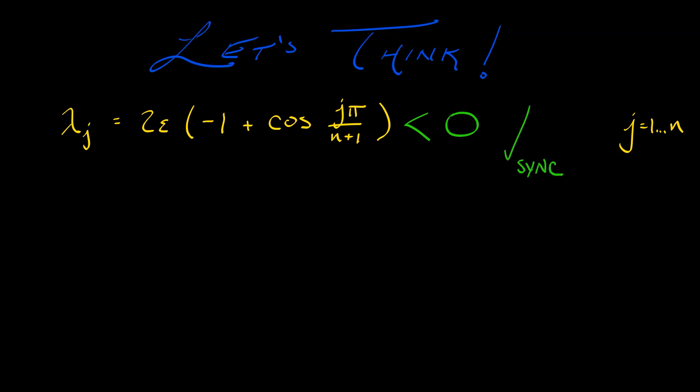But how quickly? Notice, because all these eigenvalues are real, there's a dominant eigenvalue. And the dominant eigenvalue is going to tell you the convergence rate. Everything is going to line up with that dominant eigenvalue and dominant eigenvector. Now, in this case, the dominant eigenvalue, the one that is largest, has j equal to 1.